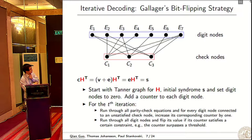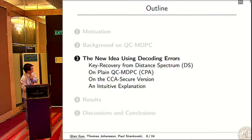We add a counter to each digit node. For the t-th iteration, we run through all the check nodes to check if the check equation is satisfied. If not, we increase the counter corresponding to its neighbor. After running through the check nodes, we run through all the digit nodes to check the counter. If it's too large, then we flip the bit.